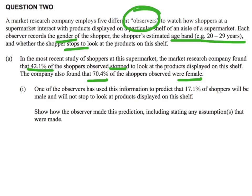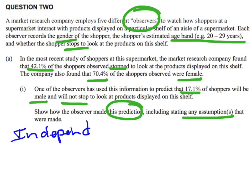One of the observers used this information to predict that 17.1% of shoppers will be male and will not stop to look at products displayed on this shelf. So we need to figure out how that observer made the prediction and look at any assumptions that were made. One of the things that first occurs to me as soon as it starts talking about assumptions is this whole idea of independence.